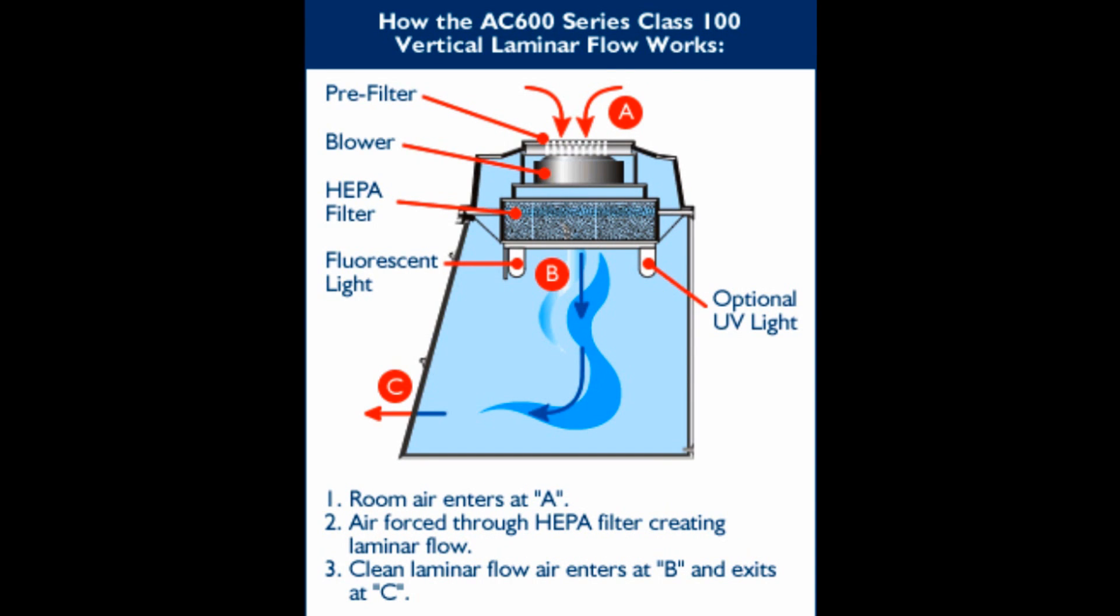How the vertical laminar flow works: Room air enters at pre-filter. Air is forced through HEPA filter creating laminar flow. Clean laminar flow air enters at B and exits at C.